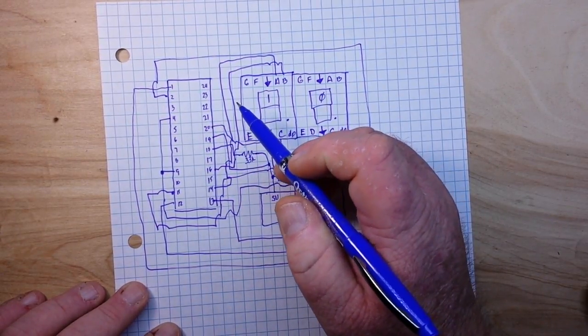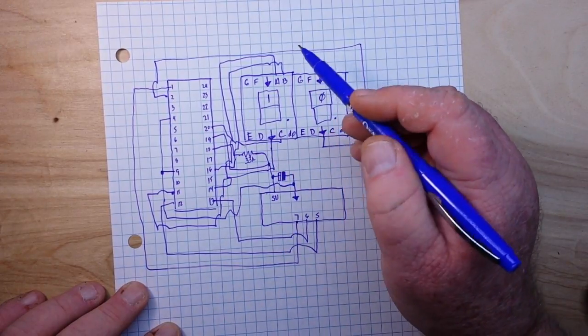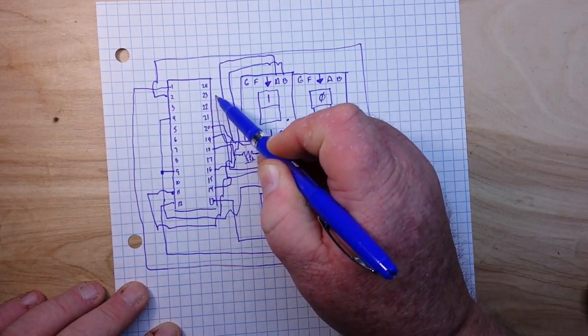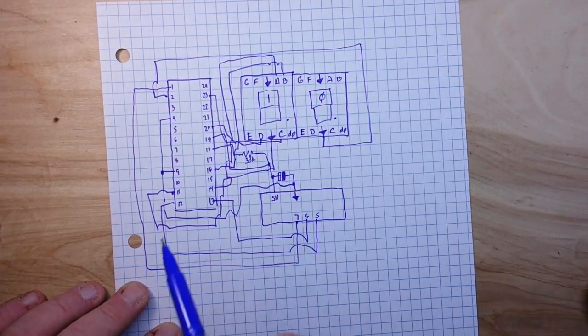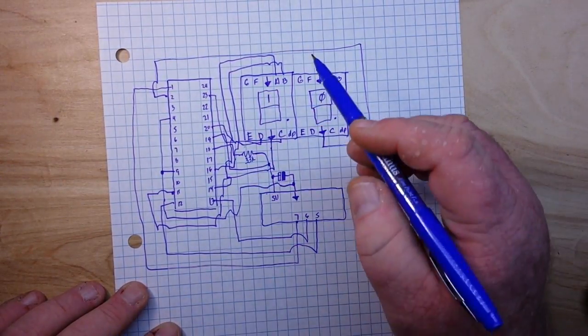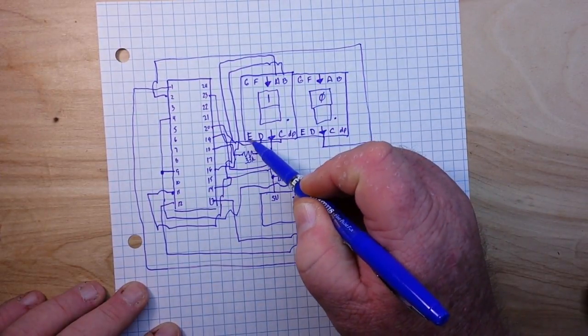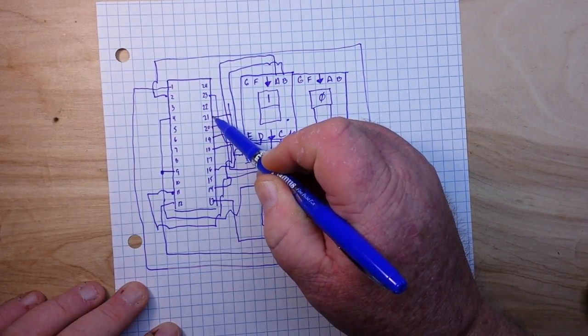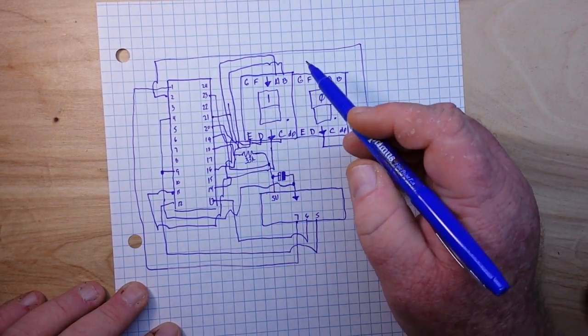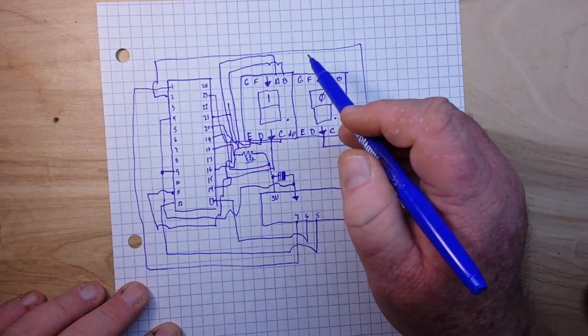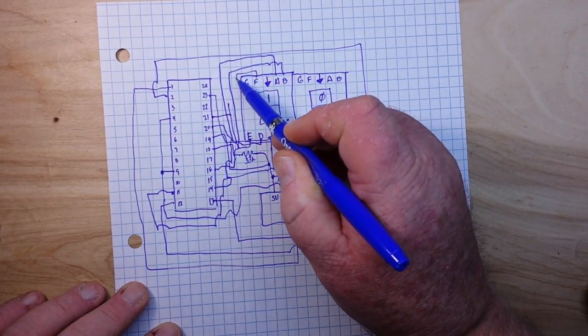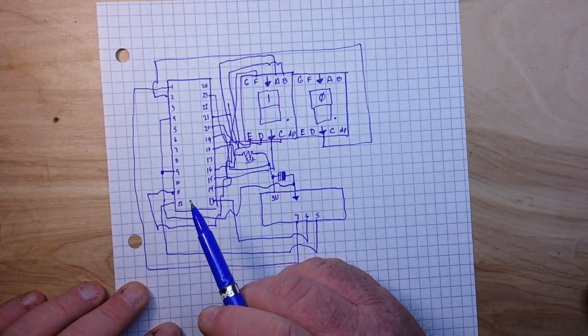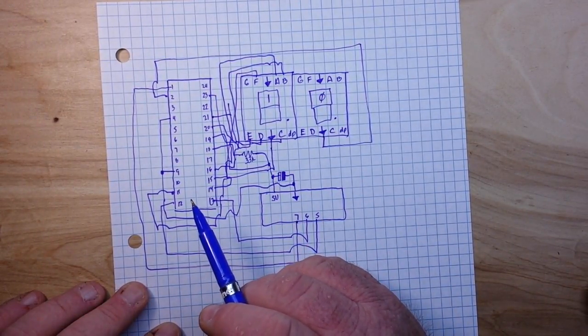D goes to 23. E goes to 21. F goes to 15. And G goes to... where does G go?